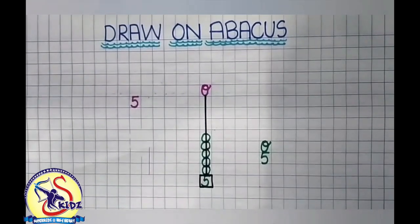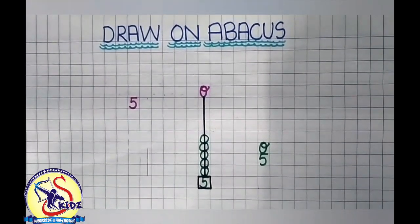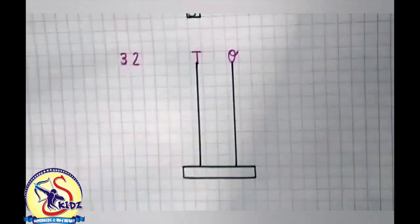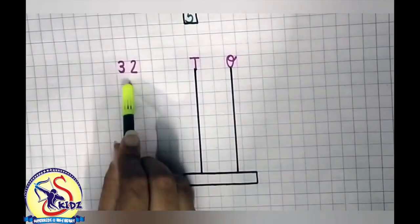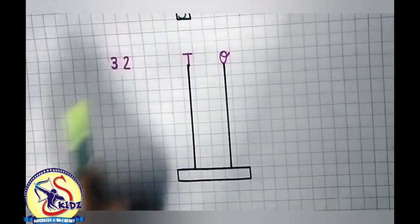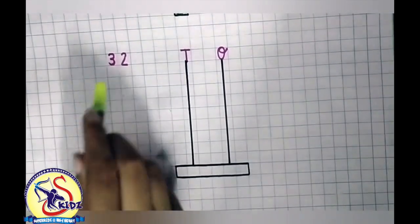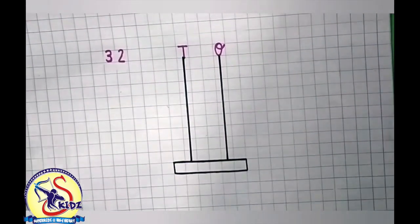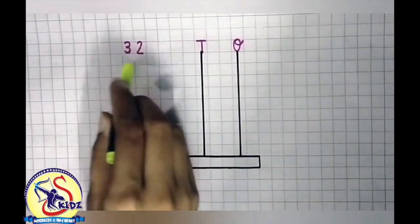Now we are going to do one more example. Let's see. This is number 32. We are going to draw number 32 on Abacus. Number 32 is a double digit number.